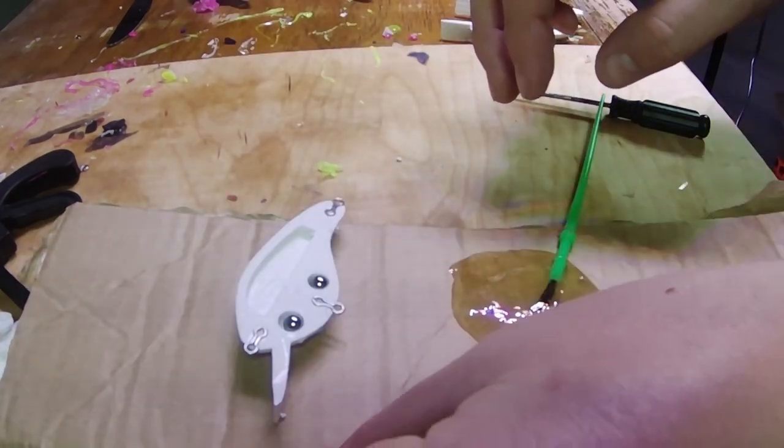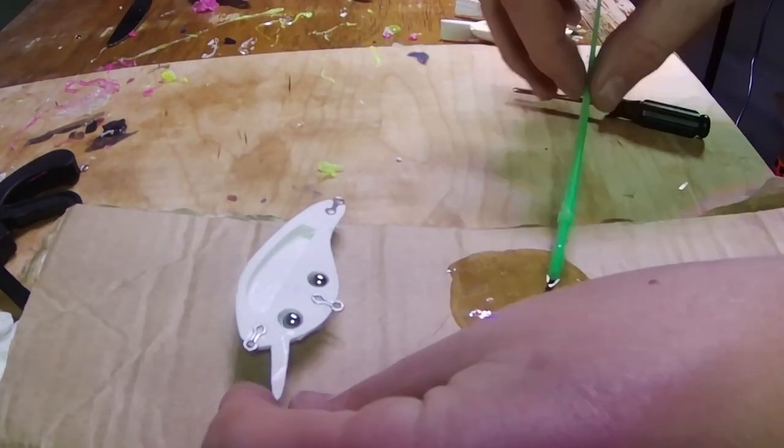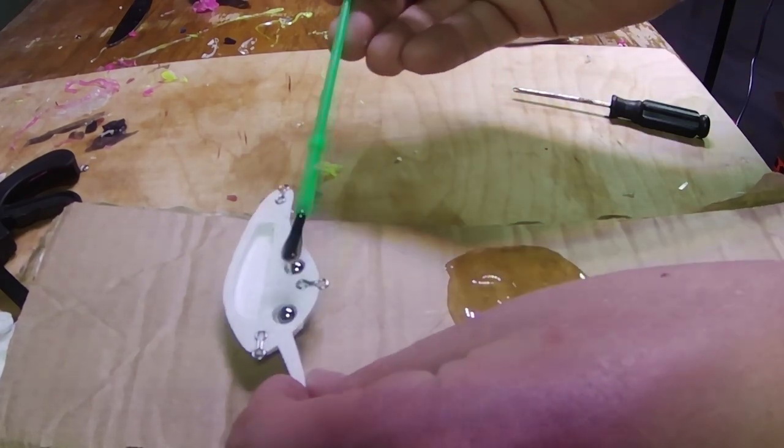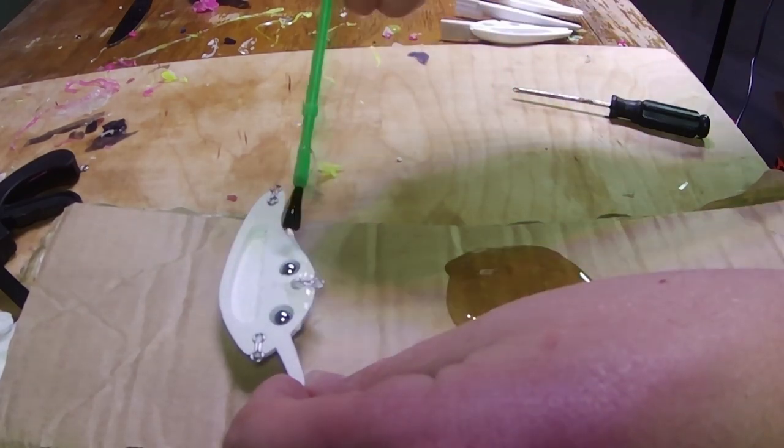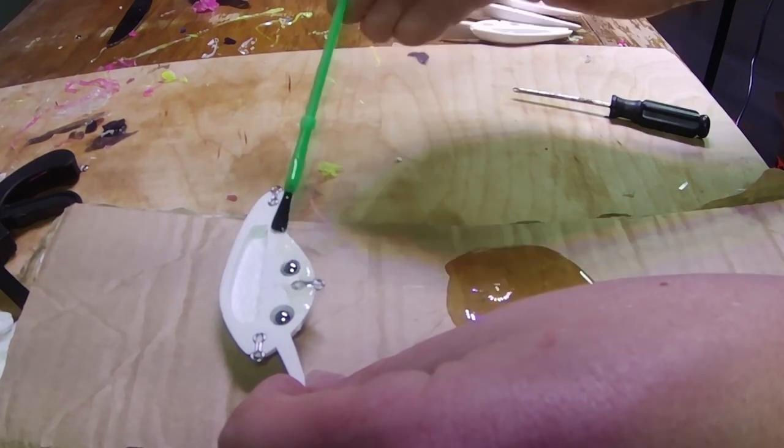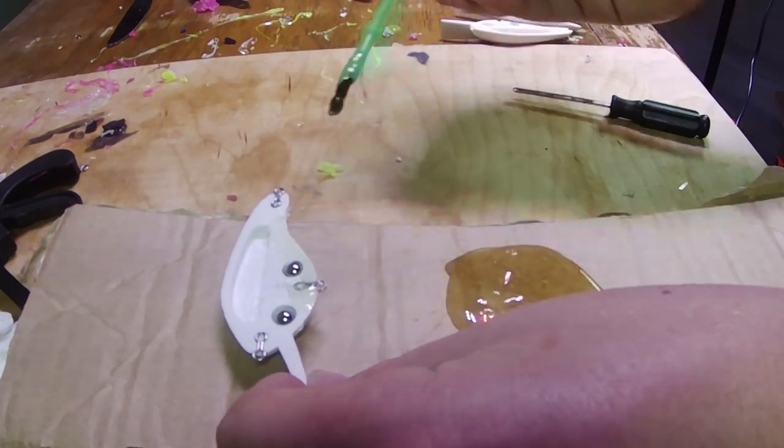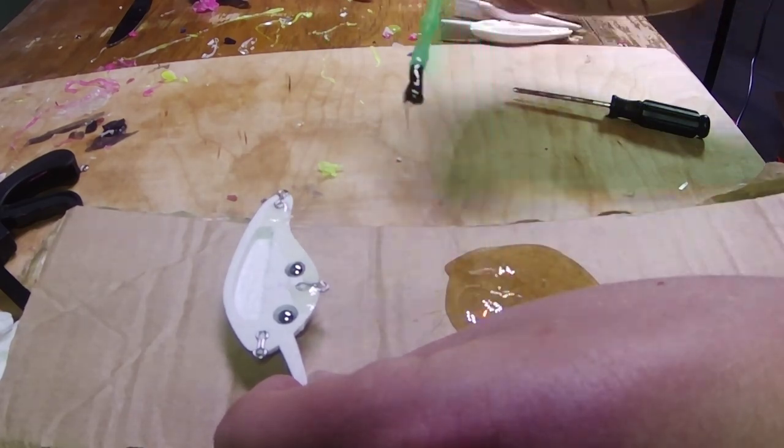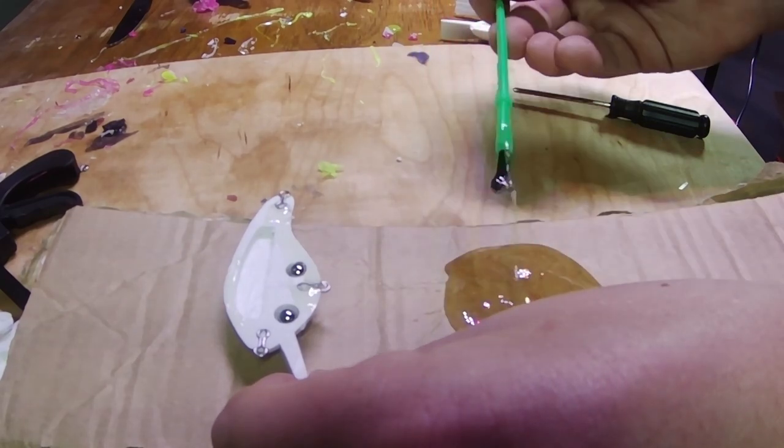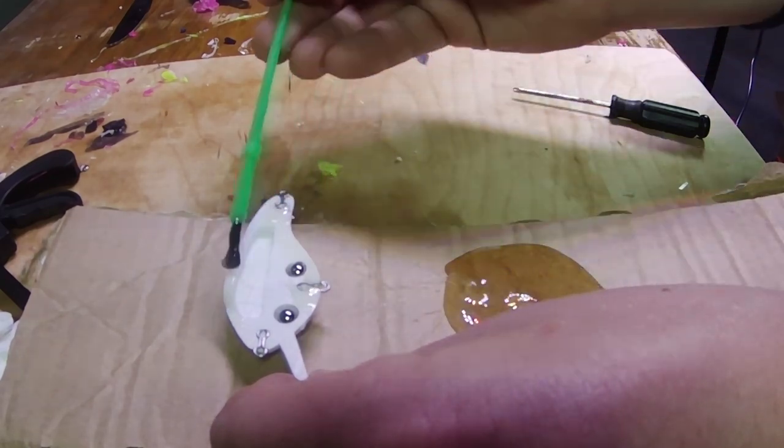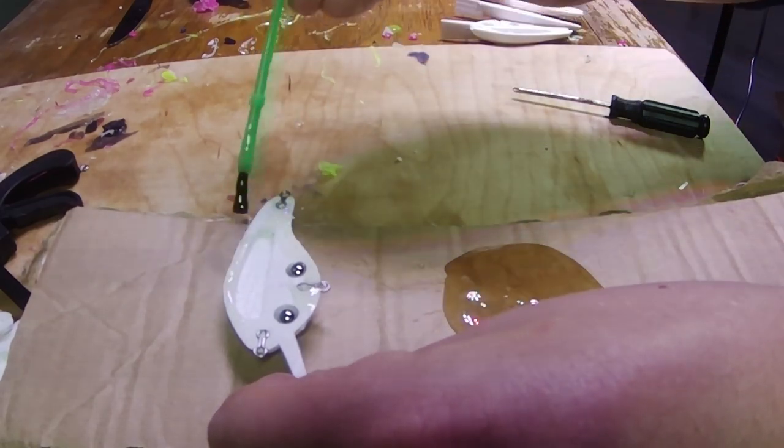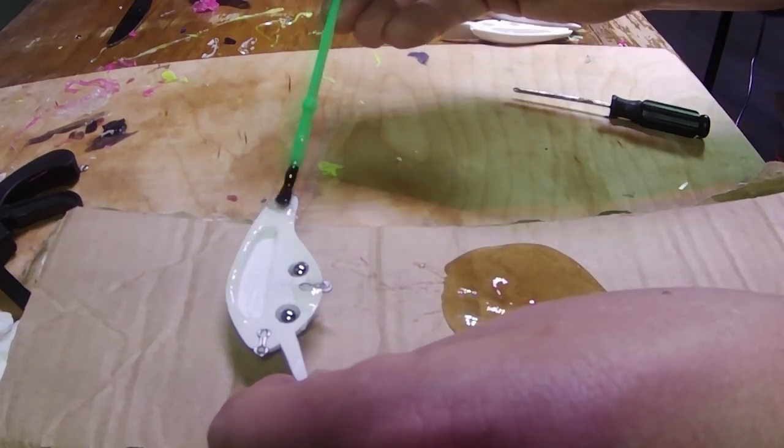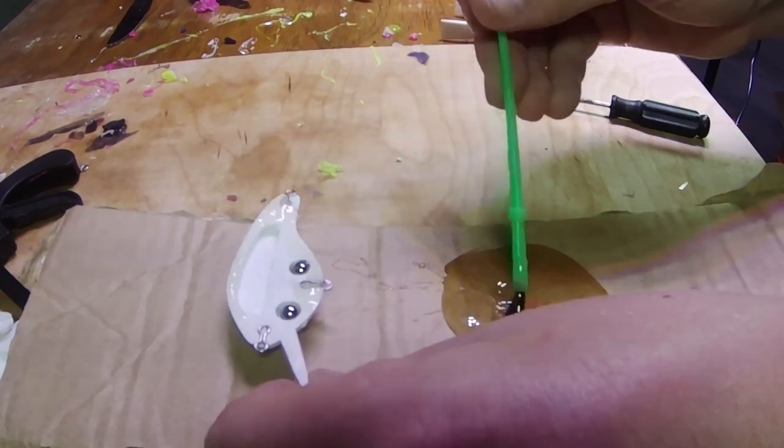All right, so our epoxy is now mixed up. Now do this trying to block your view as little as possible. Just going to take some with our brush and brush it on our bait. You can avoid getting it on the ball bearings. That'll let the rattle work better. But a lot of times you can just smack it against something. It will break free as long as it's not like filled with epoxy. You want to get a lot on this top seam too. You're really just trying to avoid water intrusion with this. And make sure you get it in all the little holes for the hook hangers.